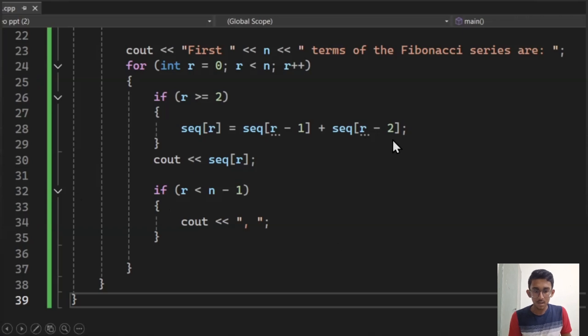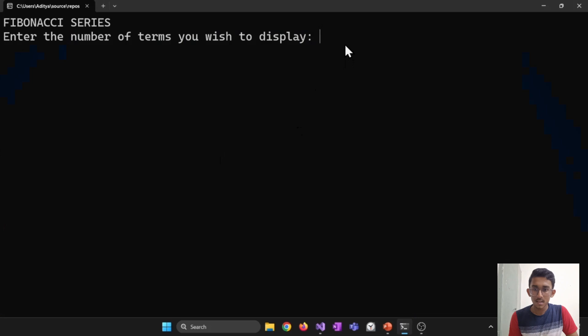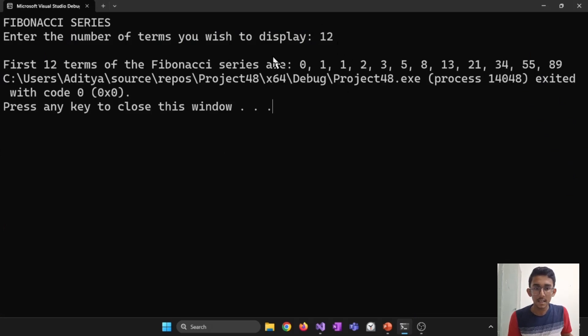So that is it for the code. Now let's try and run it. Say for n equal to 12, I get the output 0, 1, 1, 2, 3, 5, 8, 13, 21 which is 13 plus 8, 34 which is 21 plus 13, 55 which is 34 plus 21, 89 which is 55 plus 34.